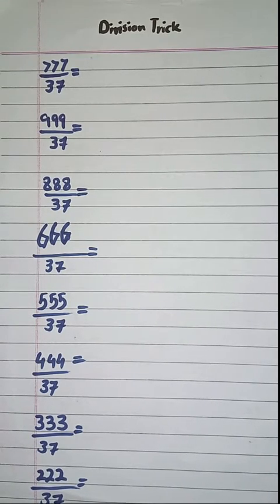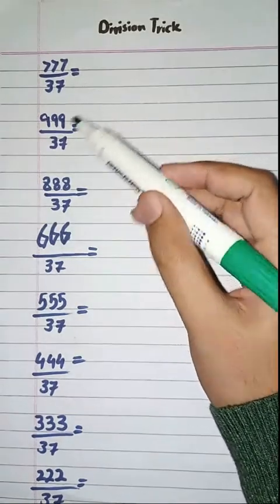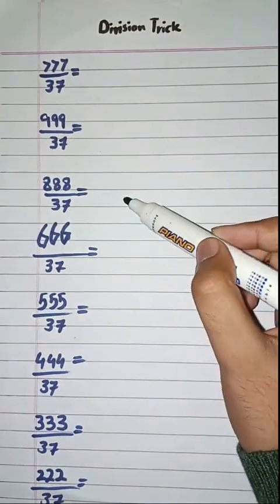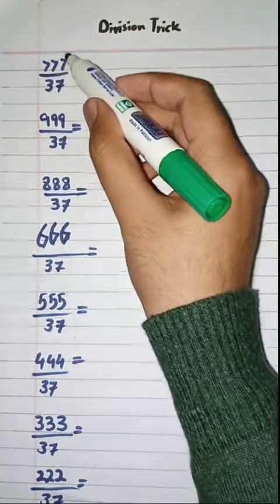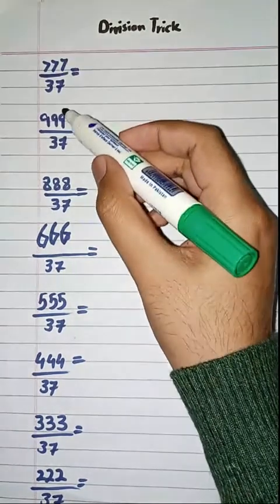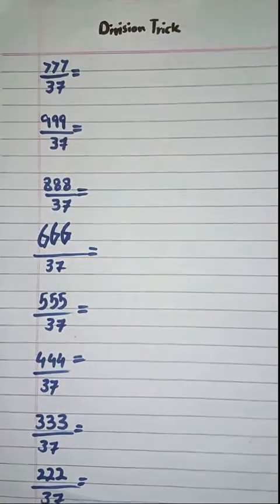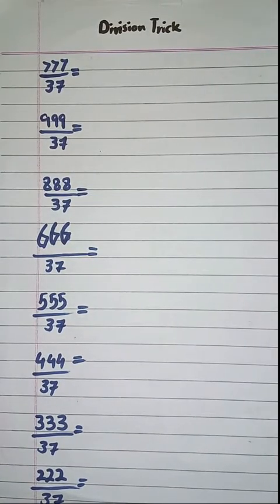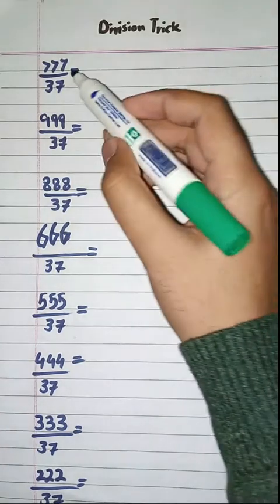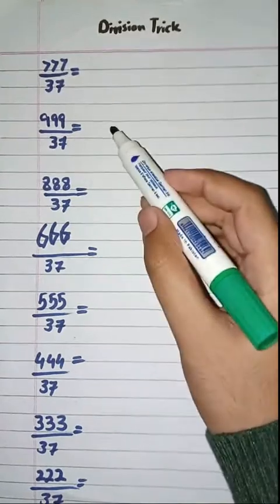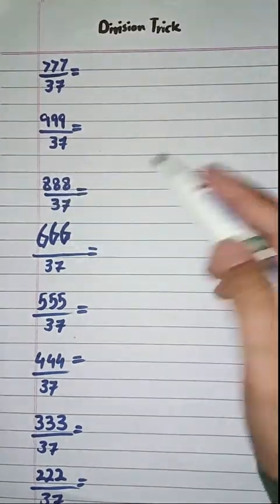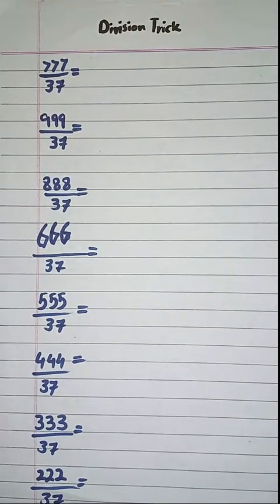We have to divide 777, 999, 888 and so on by 37, which contain the same digits. This contains only 7, this contains 9, this contains 8. So with this trick you can divide multiple numbers containing same digits — like 777, 999, or 666 — by 37. So let's start.